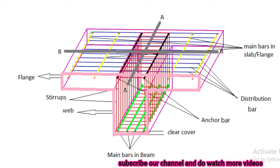The four bars of green color in our web are main bars in the beam, and the two black reinforcement bars in this figure are our anchor bars. Anchor bars hold the stirrups on the compression side. This rectangular red color object in our T-beam is our stirrup — they are provided to hold our reinforcement bars together.